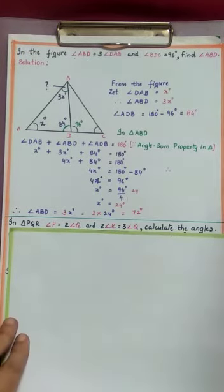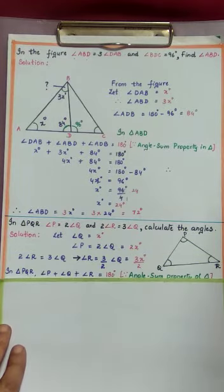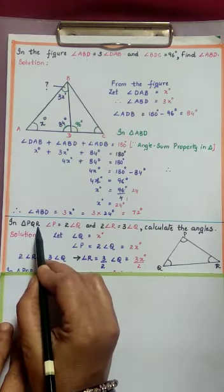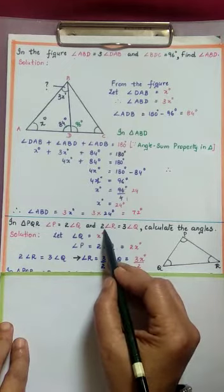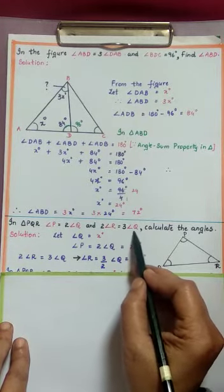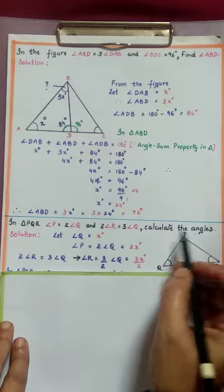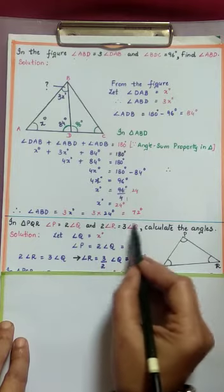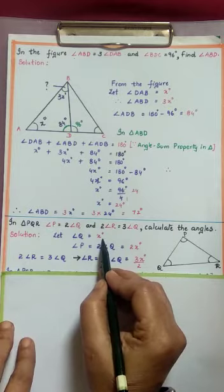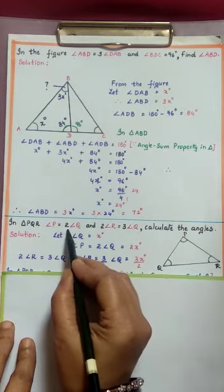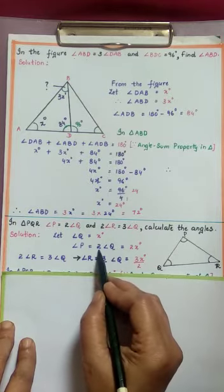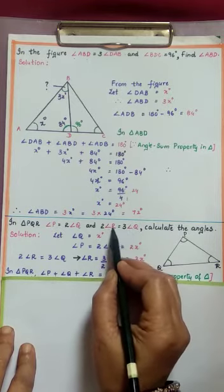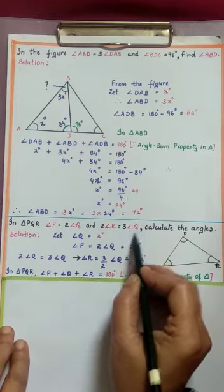This is the way we can find the angle from the given data. Now come to the next problem. In triangle PQR: angle P is equal to 2 times angle Q, and 2 times angle R is equal to 3 times angle Q. Calculate the angles. Angle P and angle R are in terms of angle Q, so let us take angle Q as X degrees. Then angle P is 2 times X, which is 2X degrees.